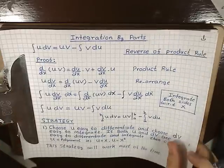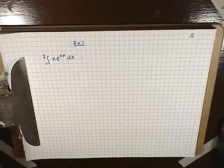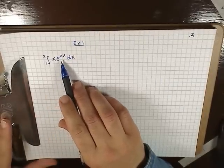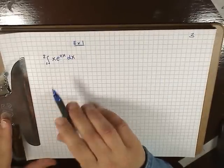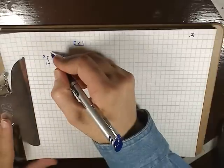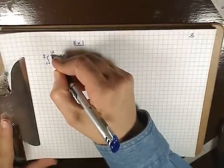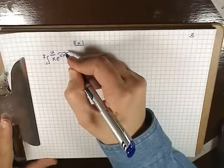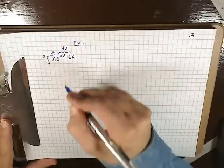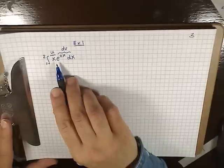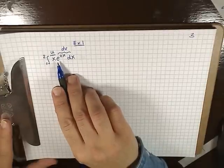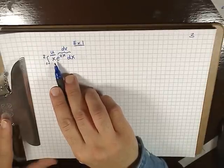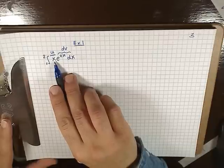Let's do an example. Here we have the integral from 1 to 2 of x e^(2x) dx. We will let u equal x, because that's easy to differentiate, and let dv be e^(2x) dx, which is easy to integrate. In fact, both terms are easy to differentiate and integrate, and in that case we choose u to be the polynomial, that is x.